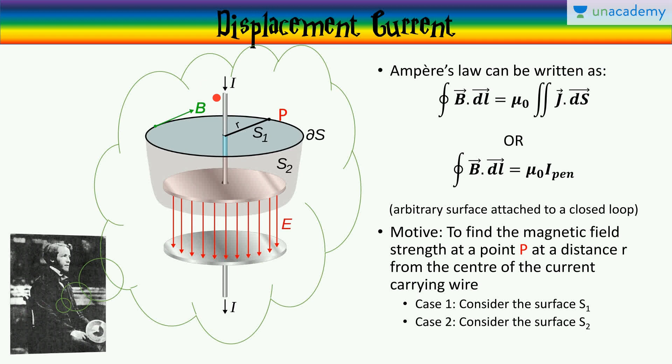Now, our motive to find out why we needed a displacement current term in the Maxwell's equations is going to take us through a small journey here. We're going to do some experiments and some imagination, some thought experiments. To find out the magnetic field strength at the point P, shown here, at a distance R from the center of the current carrying wire, which is the radius of the circular loop.